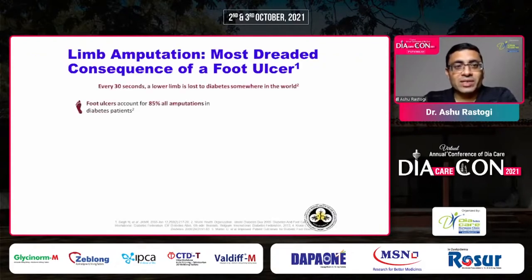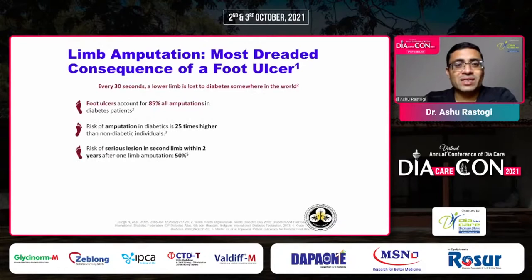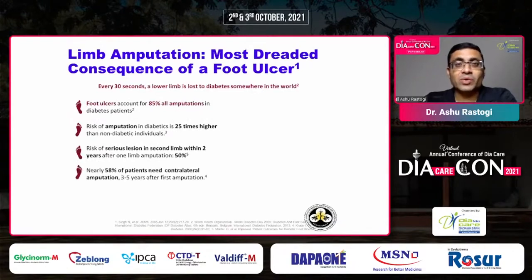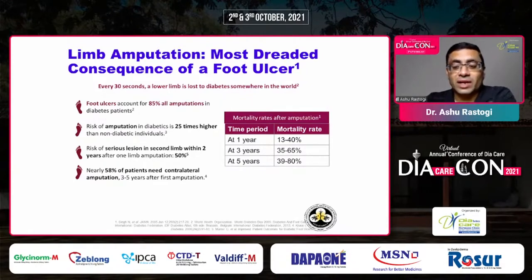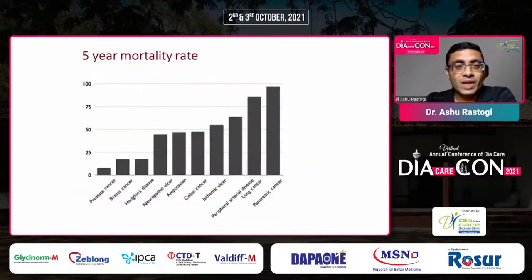Diabetic foot is also the most common cause of non-traumatic amputation, causing significant loss of daily activities and mortality. A limb amputation occurs almost every 30 seconds. The risk of amputation in a patient with diabetes is around 25 times higher, and almost two-thirds of patients who have an amputation will never return to your clinic if they are not properly cared for.